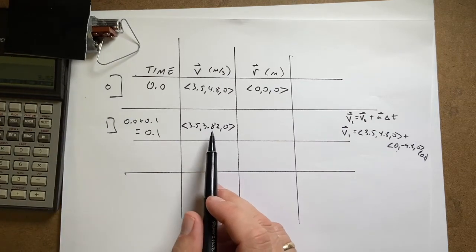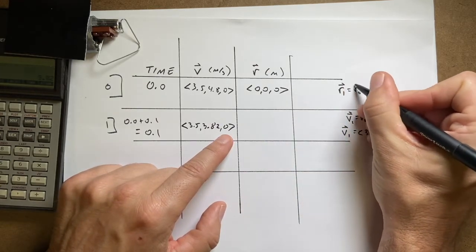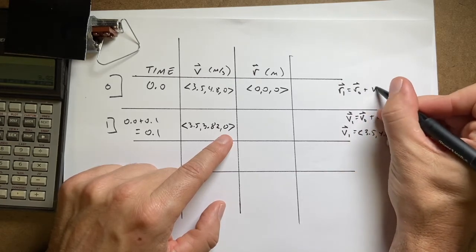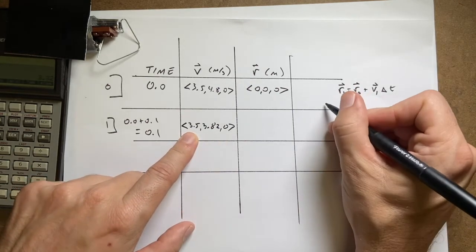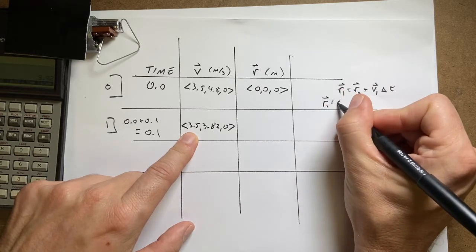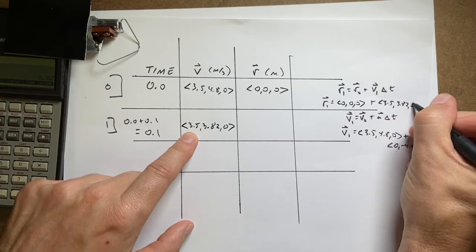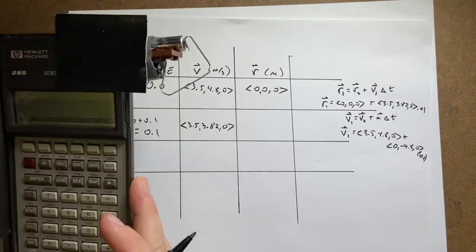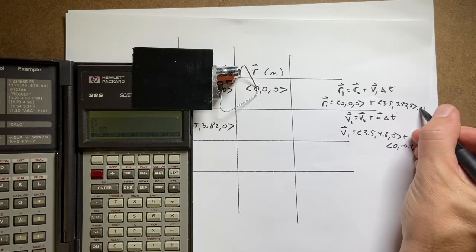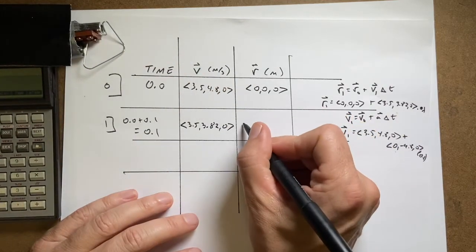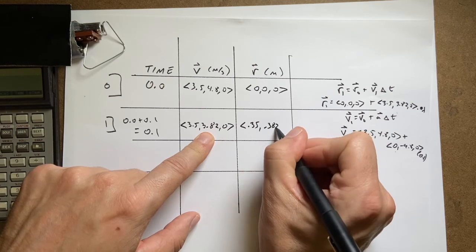Now I use this velocity to calculate the position. r1 = r0 + v1 * delta_t = (0, 0, 0) + (3.5, 3.82, 0) * 0.1. In my head: x = 3.5 * 0.1 = 0.35, y = 3.82 * 0.1 = 0.382, z = 0. So r1 = (0.35, 0.382, 0) meters.